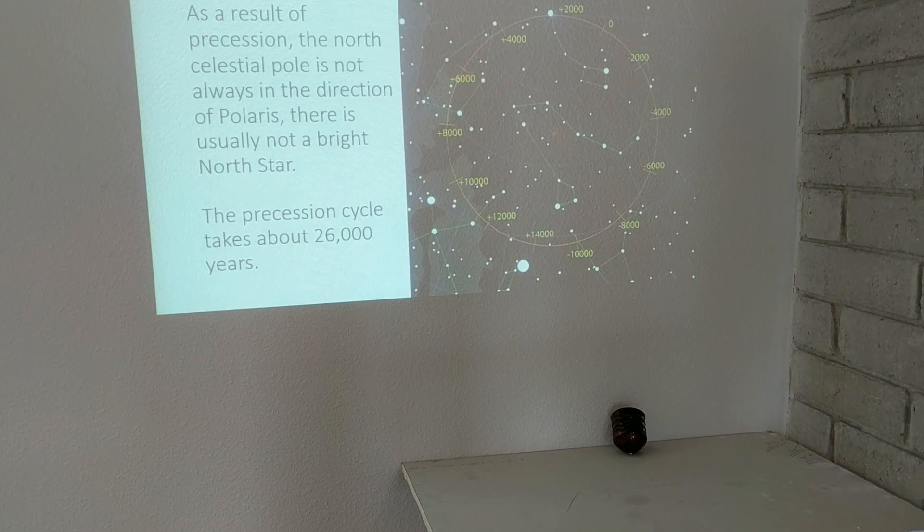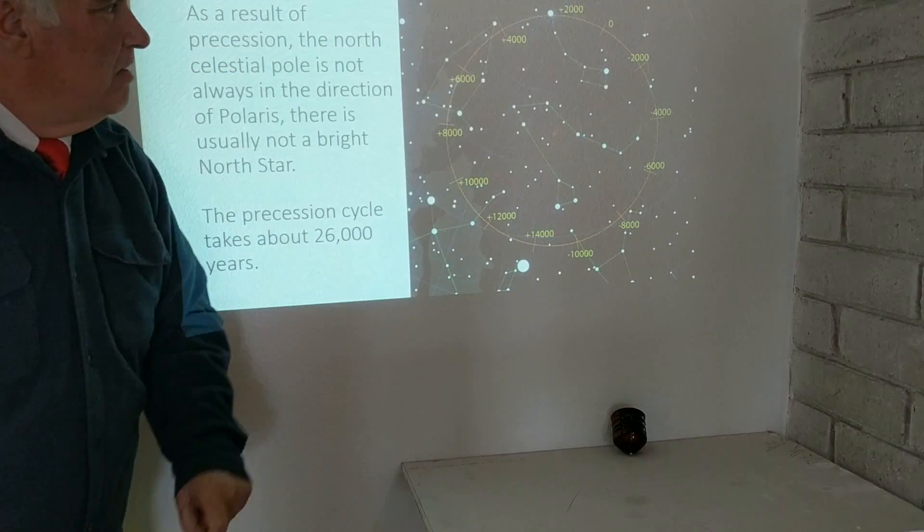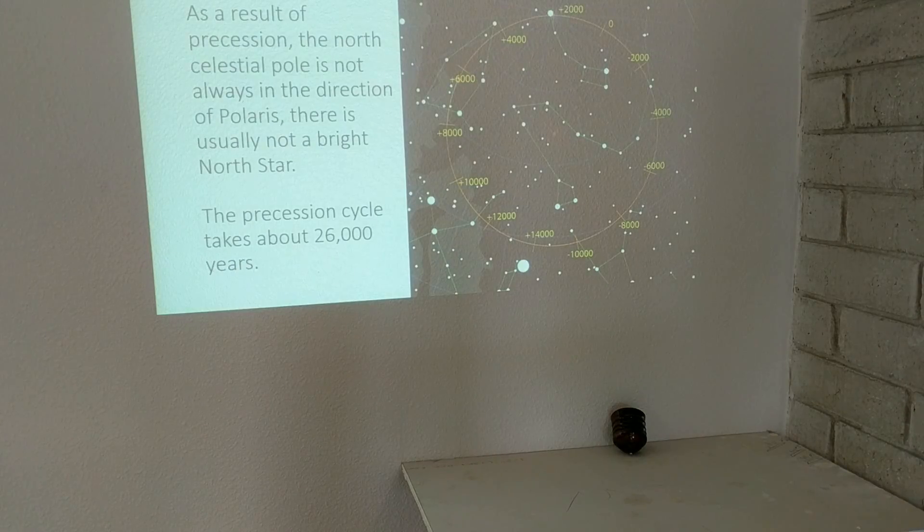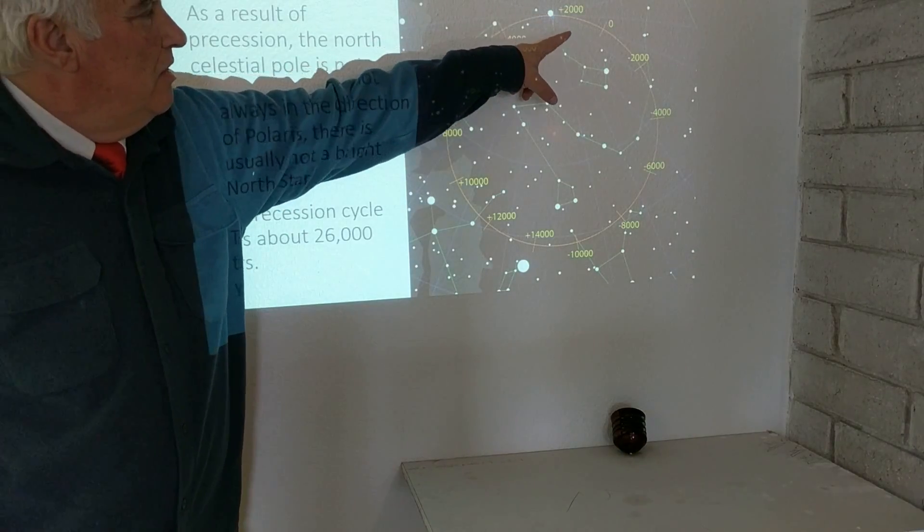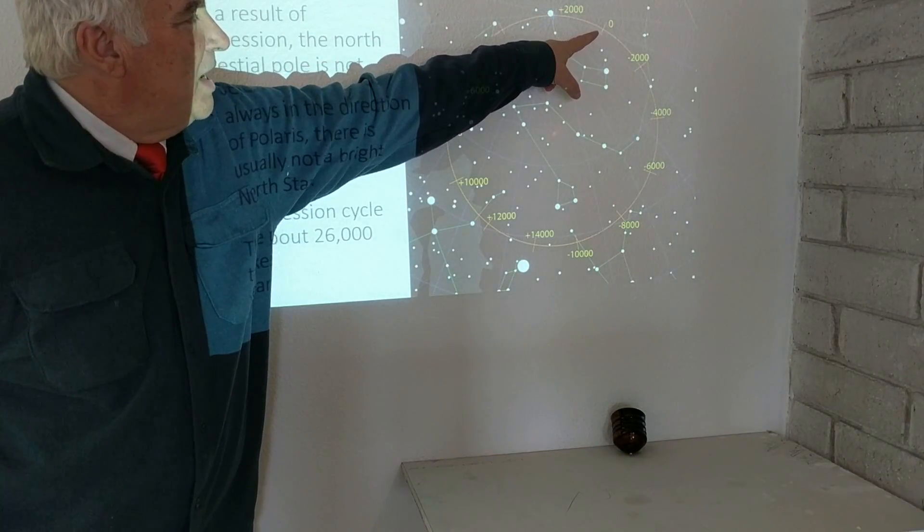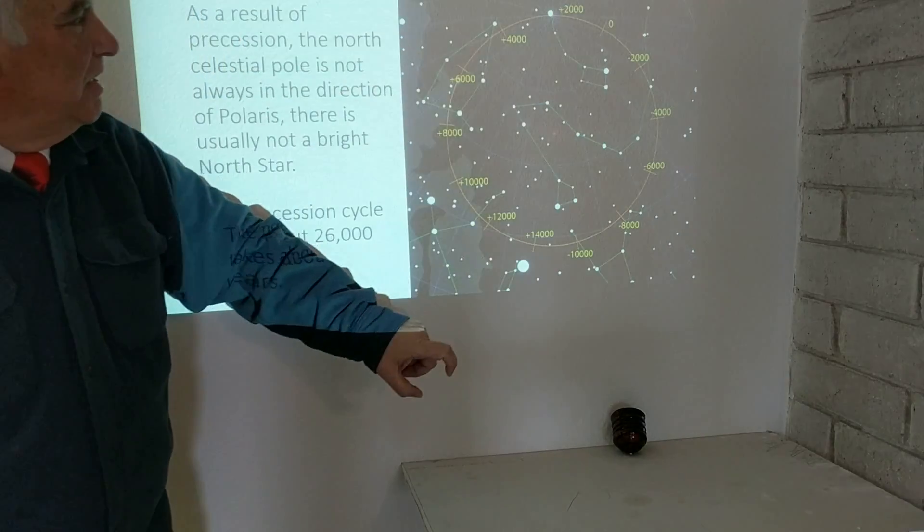As a result of precession, the north celestial pole is not always in the direction of the star Polaris. We can see here Polaris is here now, and 2,000 years ago the north celestial pole was not pointed at Polaris. It was pointed approximately there.